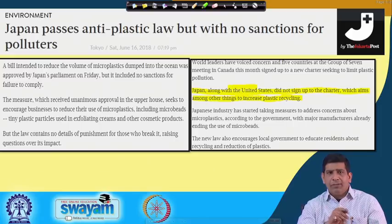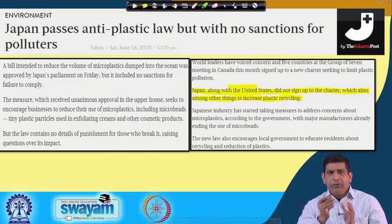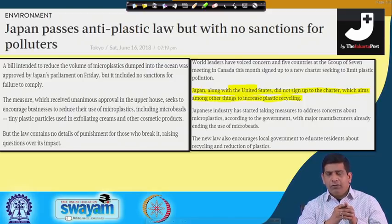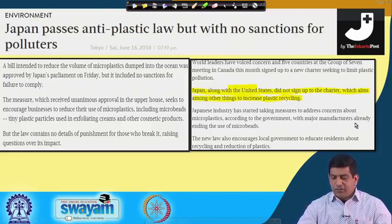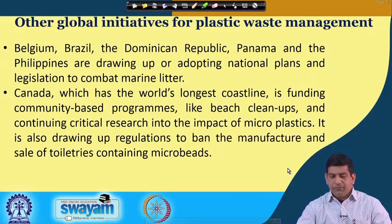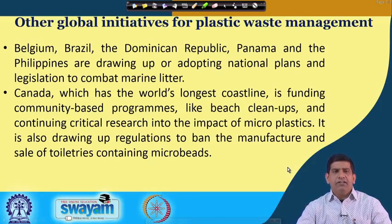World leaders have voiced concern, and five countries at the G7 meeting in Canada signed a new charter to limit plastic pollution. Canada has a huge coastline and those beaches are very important for the Canadian economy, so they need to keep those waters clean. Japan along with the US did not sign up for the charter, which among other things aimed to increase plastic recycling — a little drawback on the Japanese side, since Japan is known for better environmental practices. Countries from Brazil, Belgium, Dominican Republic, Panama, and Philippines — every country is looking at plastic today.